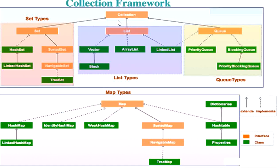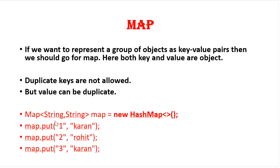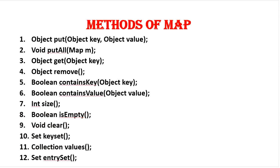When should we go for Collection and when should we go for Map interface? If we want to represent a group of individual objects then we should go for Collection. If we want to represent a group of objects as key-value pairs then we should go for Map interface, because Map stores objects in the form of key-value pairs.